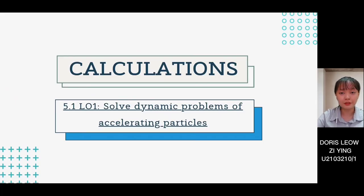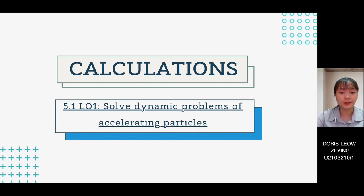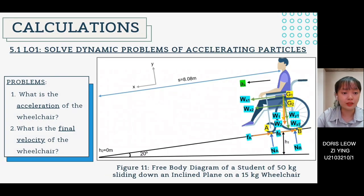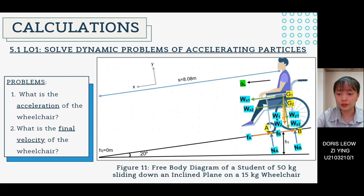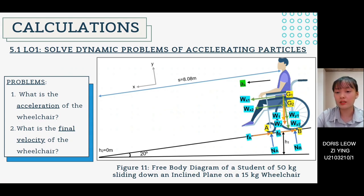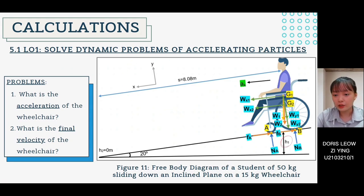Thank you. My name is Doris and I will now present the calculations. Starting with LO1, the problems are finding the acceleration and final velocity of the wheelchair. As shown in figure 11, a free body diagram of a 50 kg student sliding down an inclined plane on a 15 kg wheelchair is drawn. The center of mass of the student and wheelchair are assigned as G1 and G2, and a coordinate system is established, where H1 is the initial height and H2 is the final height.